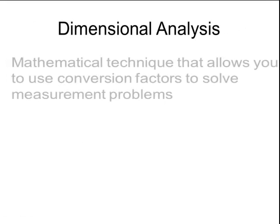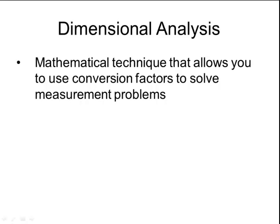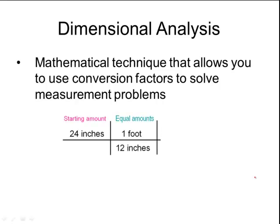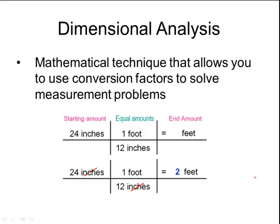When I'm converting between units, I'm going to use a process called dimensional analysis. This is just a mathematical technique that allows you to use conversion factors to solve measurement problems, and it makes the process of converting between units much simpler. Let's start off with 24 inches and convert that into feet. We write down the starting amount, and then we write down the equality, and then we're able to solve for feet. Notice by putting inches on top and writing my conversion factor so that inches are on the bottom, those inches will cancel out when I multiply. And so ultimately I'm going to be taking 24, dividing by 12, and getting 2 feet as my answer.